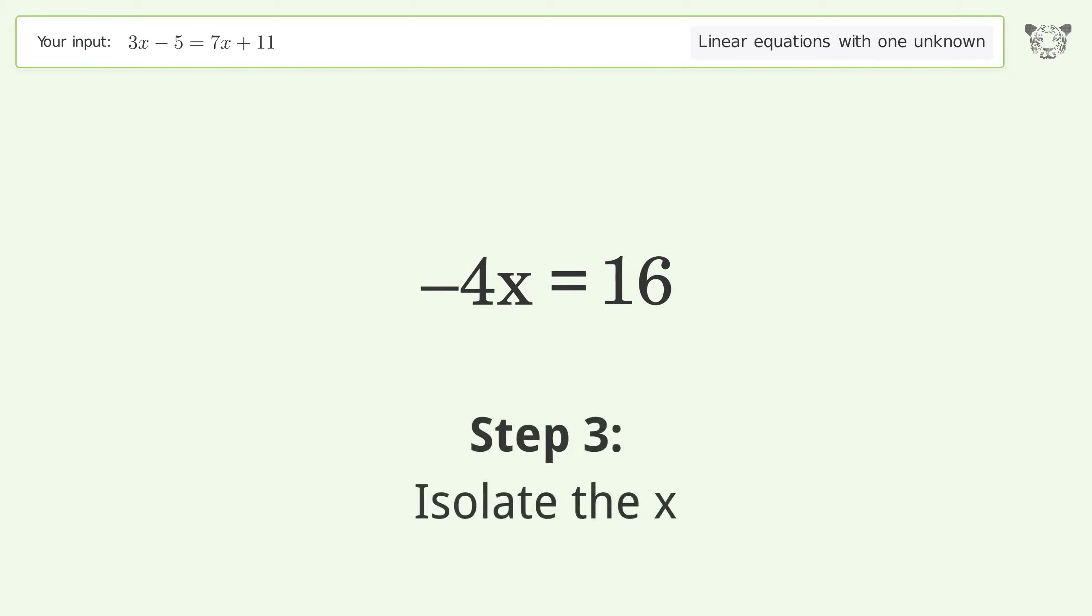Isolate the x. Divide both sides by negative 4. Cancel out the negatives.